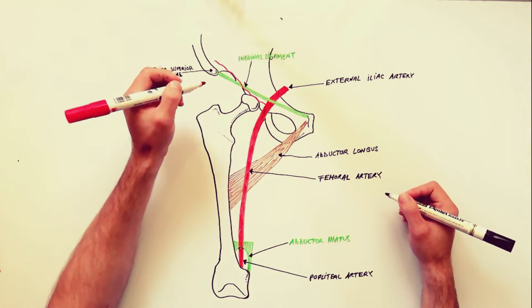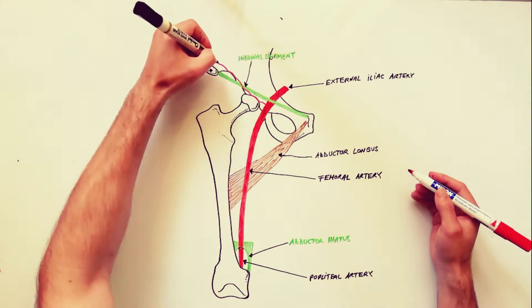Just inferiorly to the inguinal ligament, from the femoral artery arise four small branches.